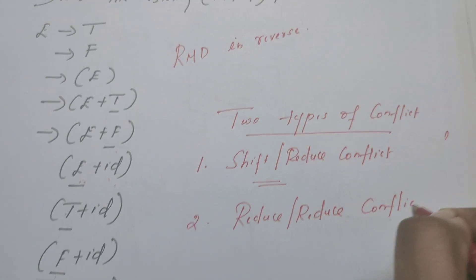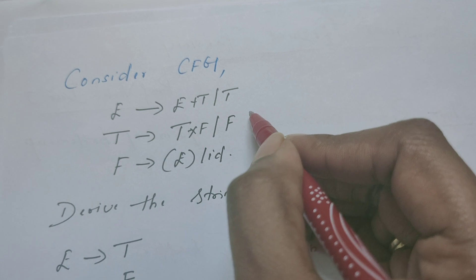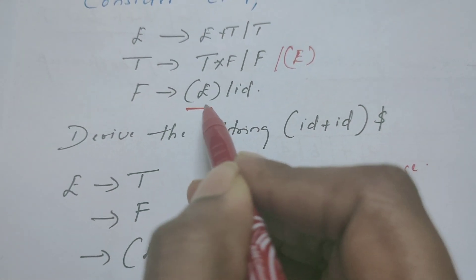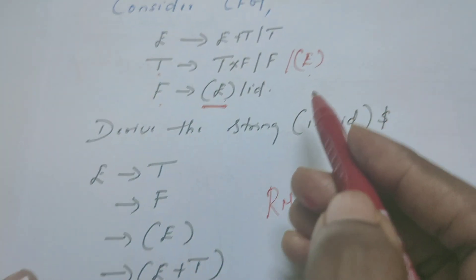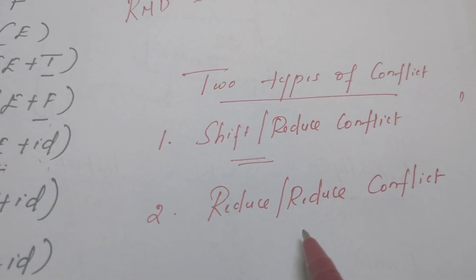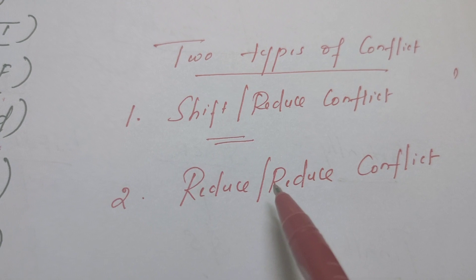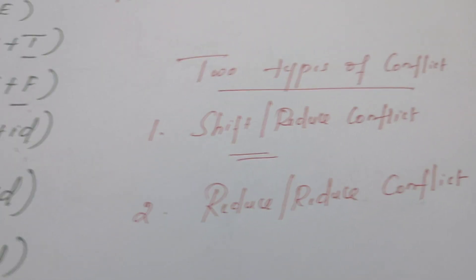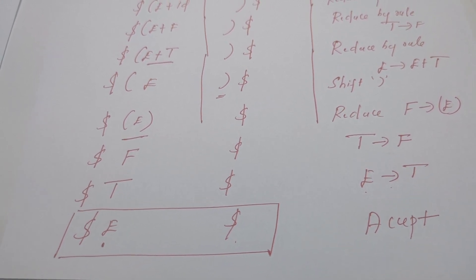The second type is the reduce-reduce conflict. For example, if the grammar also had a rule T → E, then when the parser finds handle E on the stack, it would not know whether to reduce E to F or to T. Such conflicts are called reduce-reduce conflicts. Mentioning both types of conflicts is important when answering questions about shift-reduce parsing. I hope you understood — please leave doubts in the comments. Thank you.